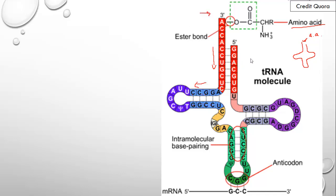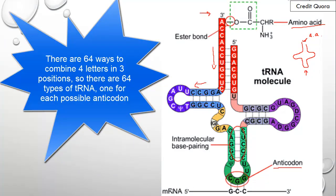There are two important parts of the tRNA molecule. Up here is where the amino acid is bound on. Then on the bottom loop of the clover there is a series of three bases — here it's CGG — and this is called the anticodon. It's really important because we're going to have complementary base pairing between these three bases and a corresponding region on the mRNA, which is called the codon.